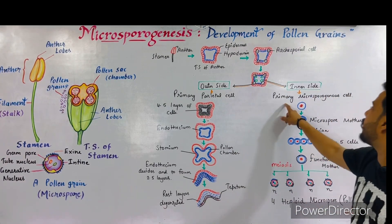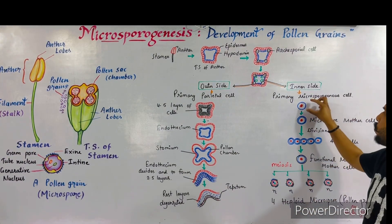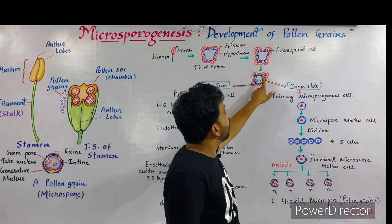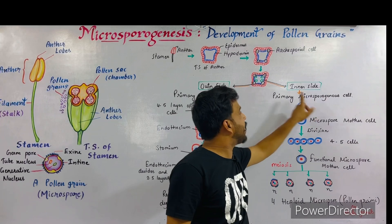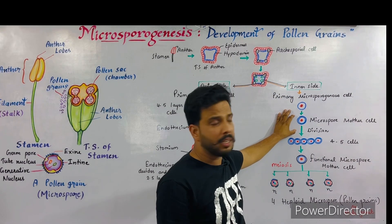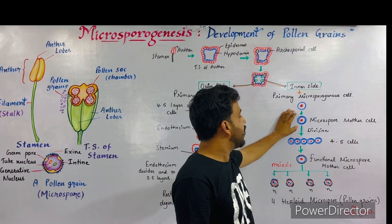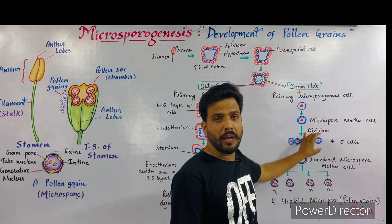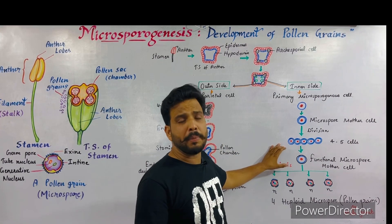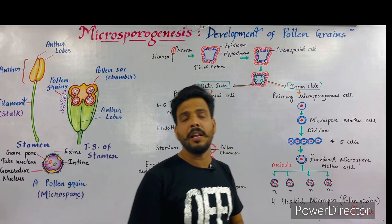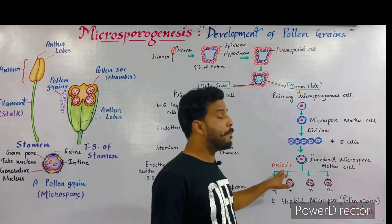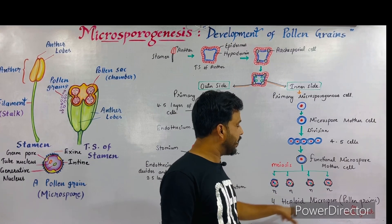On the inner side, the primary microsporogenous cell is present. This primary microsporogenous cell converts into the microspore mother cell without any division. After some time, the microspore mother cell divides to form four to five cells attached to each other. One cell from this group detaches and behaves as the functional microspore mother cell, which is the main cell that will produce the pollen grains.